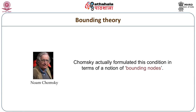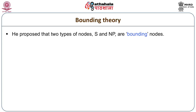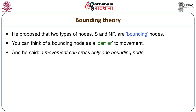Chomsky said that there are certain constraints on each movement. He proposed that certain syntactic nodes were bounding nodes. The syntactic nodes he proposed as bounding nodes were NP and S. He said that in one movement of the WH phrase, it can cross only one bounding node. Crossing one bounding node is permissible, but if it is forced to cross two bounding nodes in one movement, that results in ungrammaticality. And that, he said, is the explanation for the island constraints.